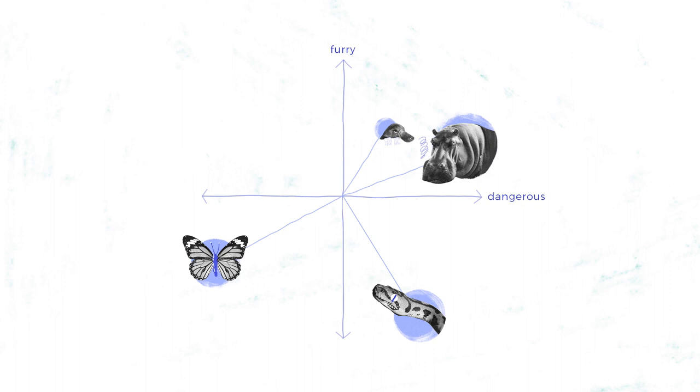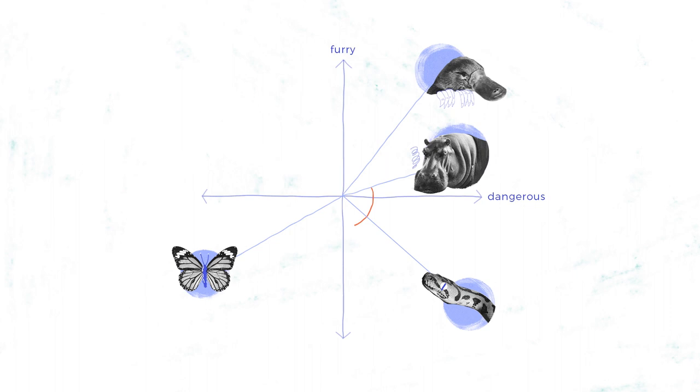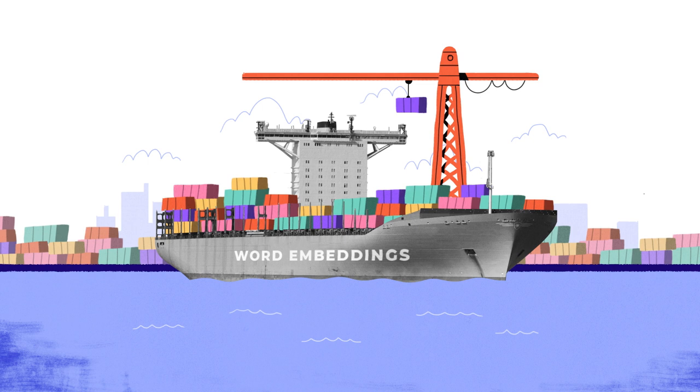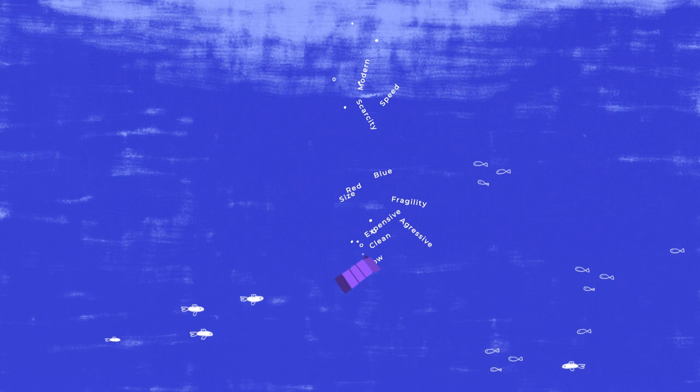We can determine the similarity between the words by analyzing the angle between their vectors. Of course, this is just a hypothetical example, and in practice engineers develop word embeddings like these on a massive scale. An ordinary word embedding might encode information about hundreds of properties, and machines need access to millions of words to truly learn the embeddings. In fact, they're not encoding for tangible properties like 'furry' or 'dangerous,' since an algorithm can't really know a word's meaning.